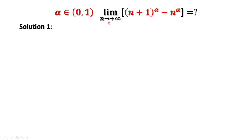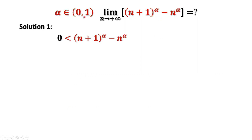We are going to solve this question in two different ways. This is the first solution. This number is bigger than zero because alpha is positive, n plus one is bigger than n, and both are positive. Therefore, the difference is positive.